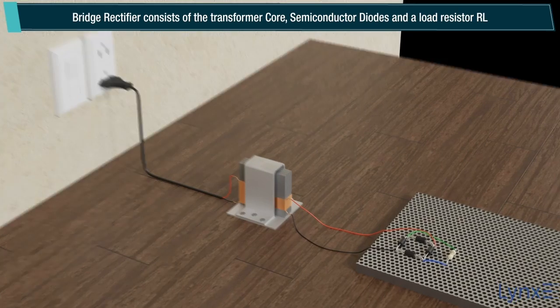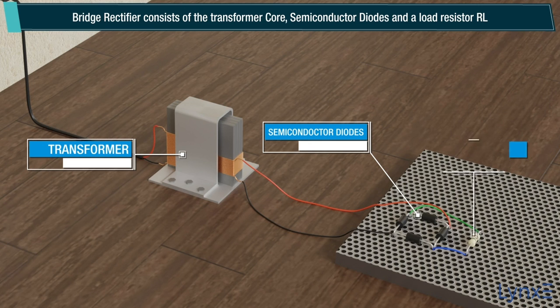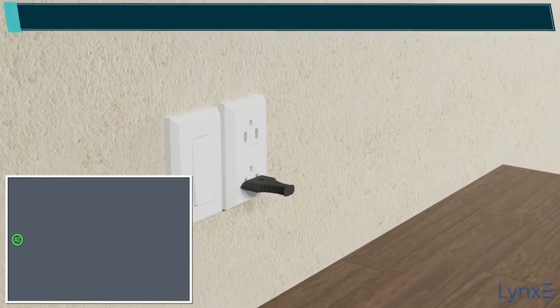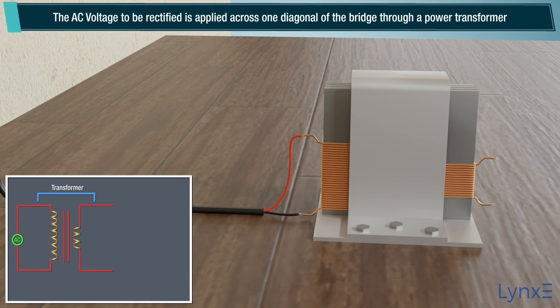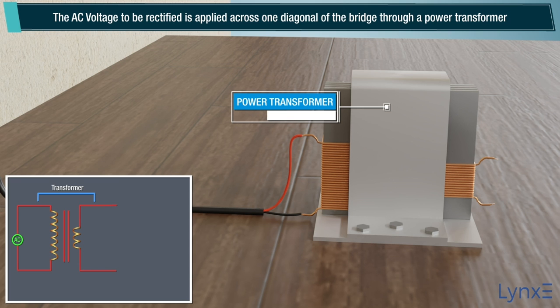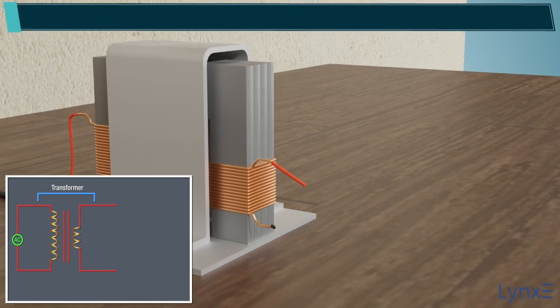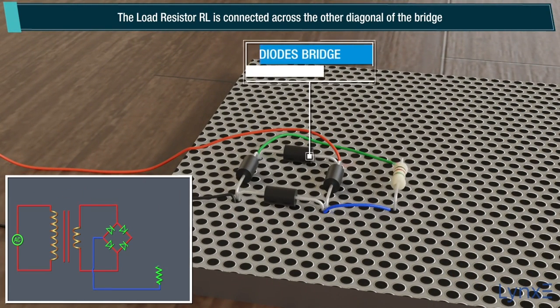Bridge Rectifier consists of the transformer core, semiconductor diodes and a load resistor. The AC voltage to be rectified is applied across one diagonal of the bridge through a power transformer. The load resistor is connected across the other diagonal of the bridge.